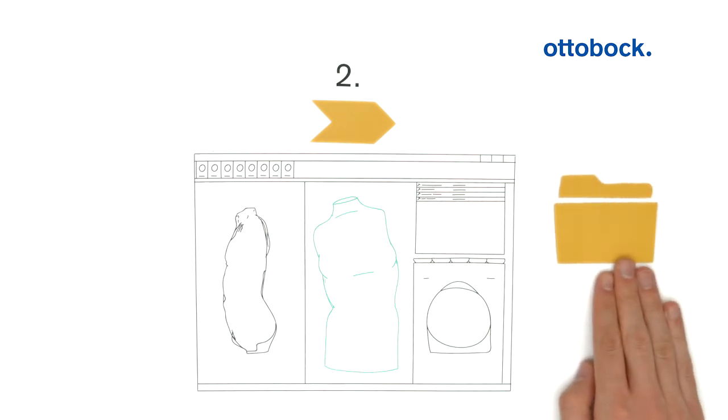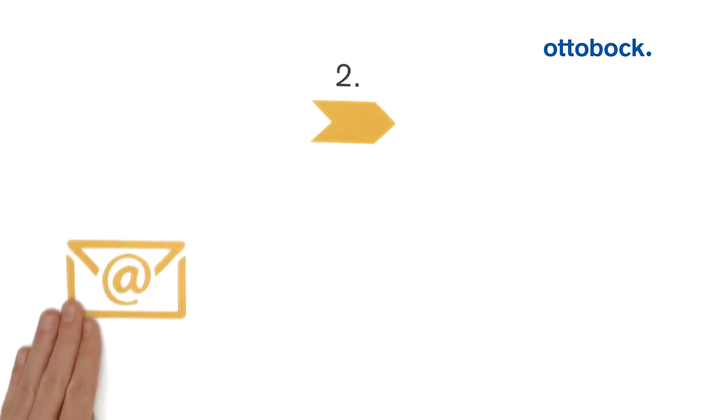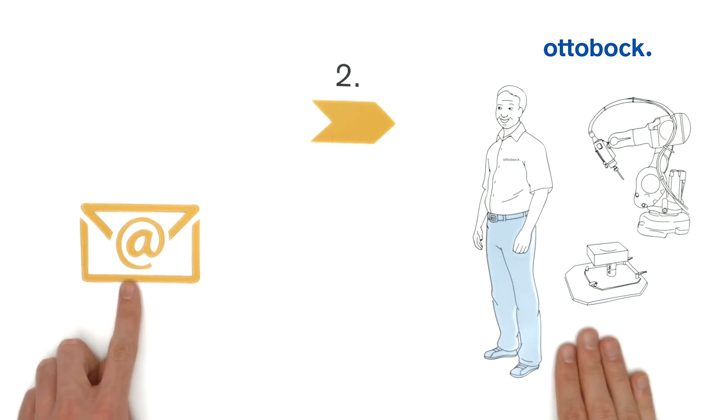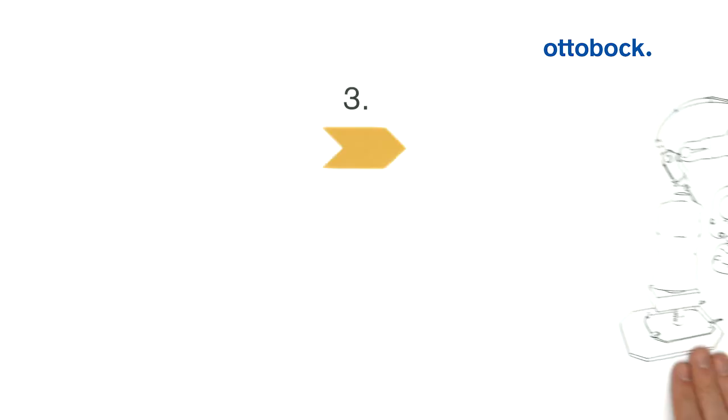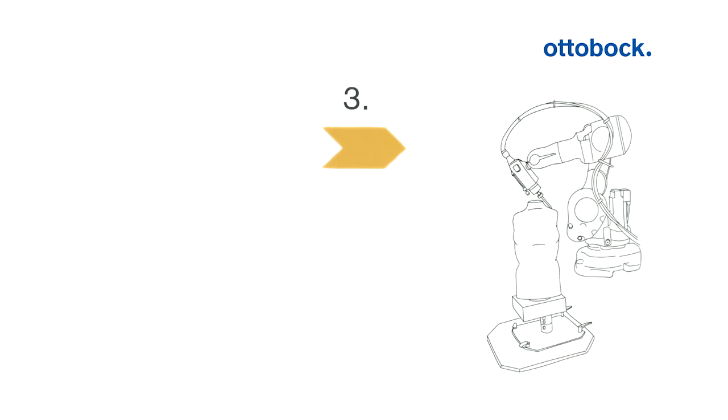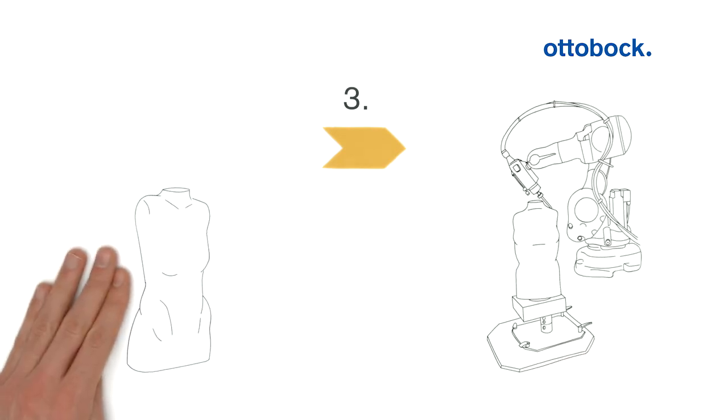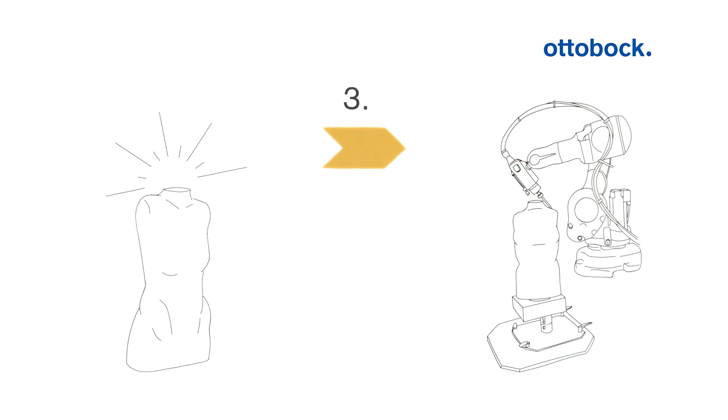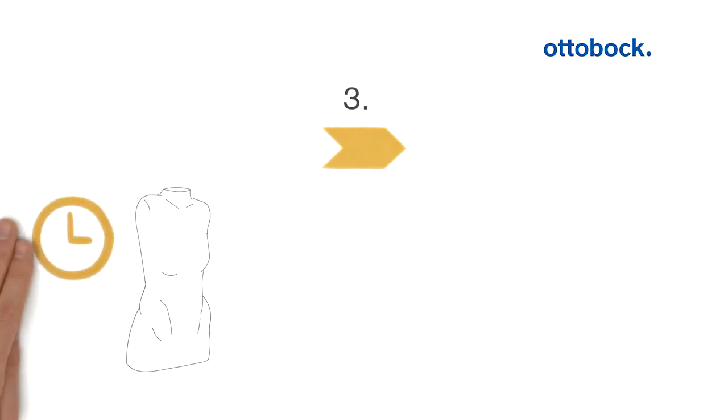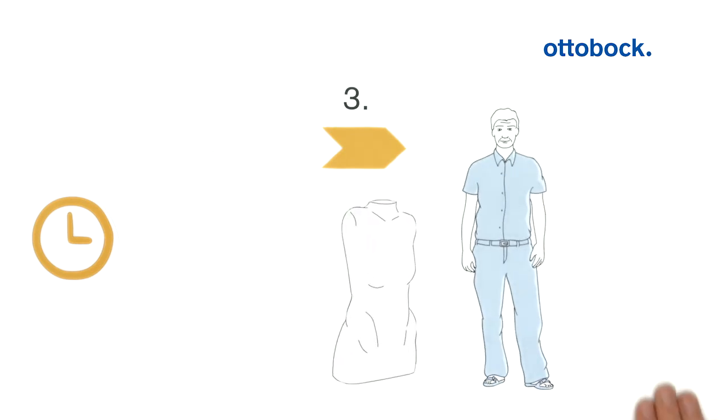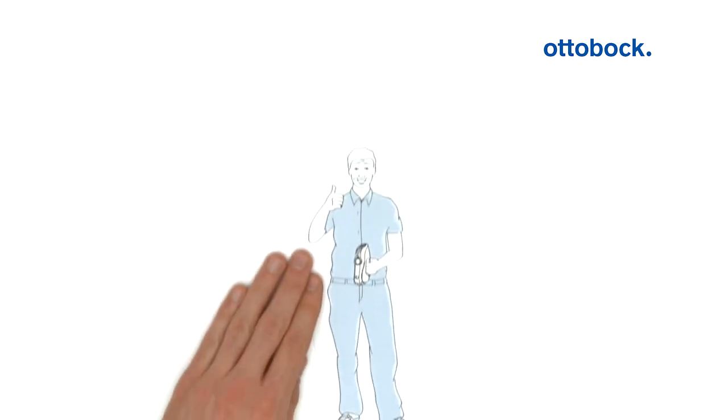Peter exports the finished model data and sends them via email to Ottobock Fabrication. Now here comes the last step: milling the positive model true to the original in usual Ottobock quality. Within the agreed time, the model or the test socket is delivered to Peter.